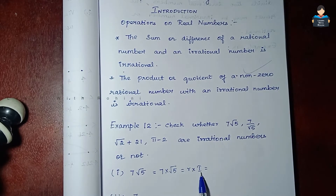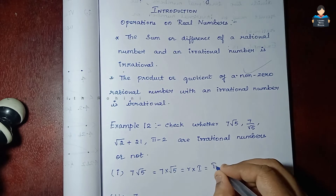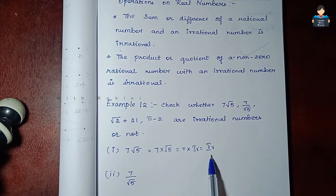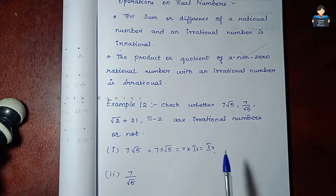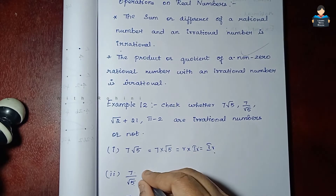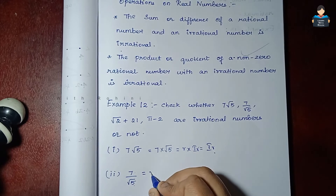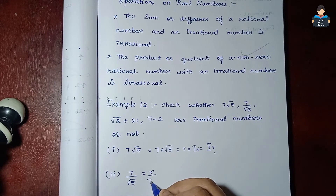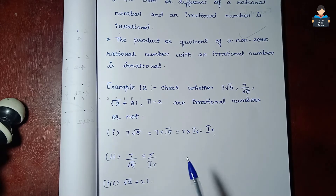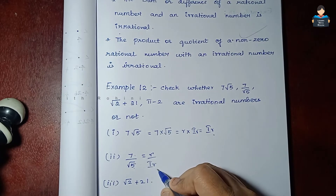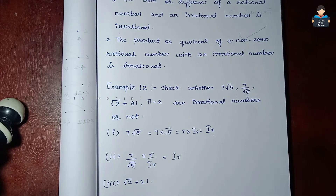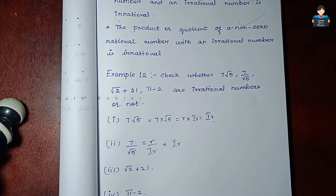So rational multiplied by irrational gives an irrational answer. Next, 7 divided by √5: 7 is a rational number and √5 is an irrational number. So one rational divided by one irrational — the answer is irrational.